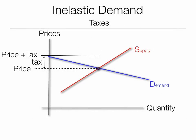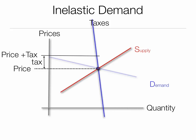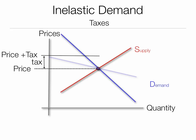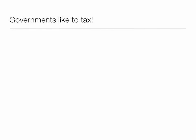Let's talk about the inelastic demand curve and taxes. You can see the price, a tax, and a price plus tax. If demand is inelastic, the tax has no impact whatsoever. That's a lot different than a normal demand curve, where the quantity supplied with the tax falls to zero. But if demand is inelastic — like on gasoline — the tax has no impact. Taxes work similarly to how drug dealers can charge any price they want to someone who's addicted. No doubt, governments like to tax inelastic goods such as gasoline, cigarettes, and gambling.